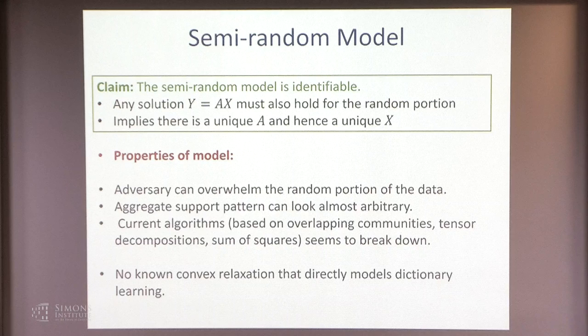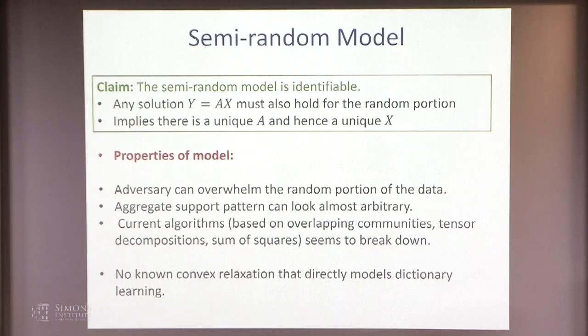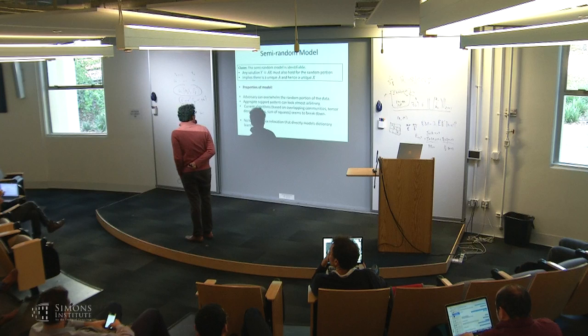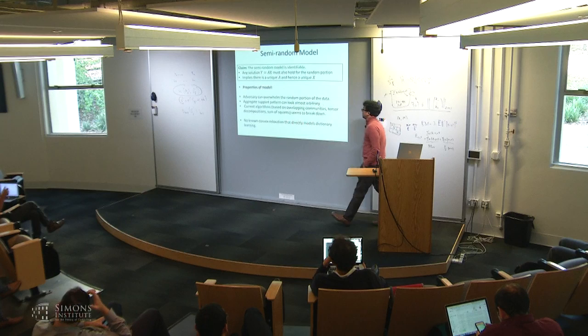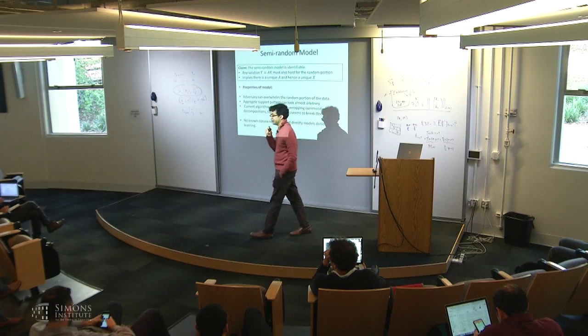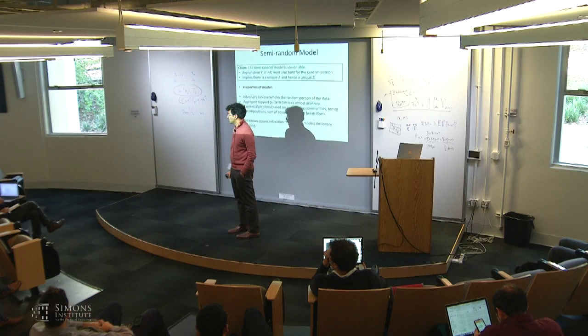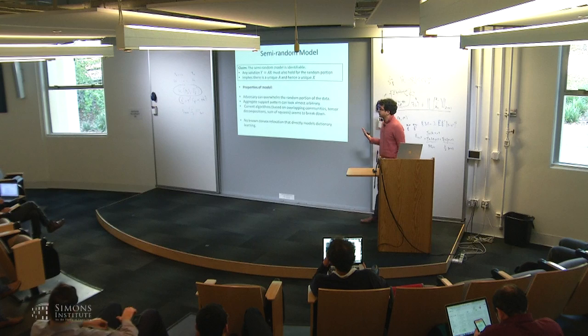Question: Does A have to be incoherent? Yes — A is assumed incoherent. You need some kind of assumption to ensure uniqueness of x. Even if you know A, you need incoherence or RIP; it's hopeless without it. Another reason we don't have algorithms for this model is that we don't have convex relaxations that capture sparse coding well, so the situation with matrix completion and compressive sensing isn't applicable here.